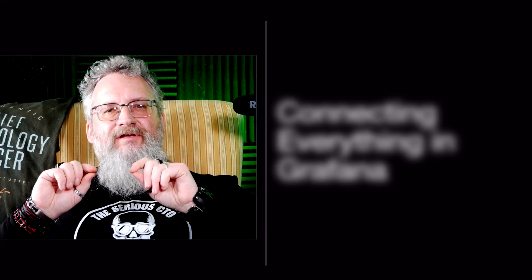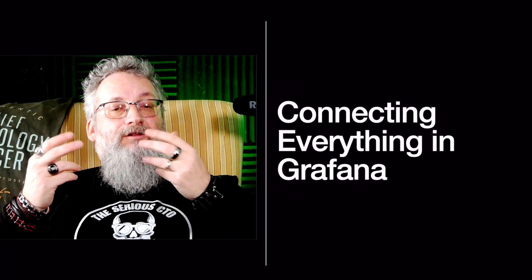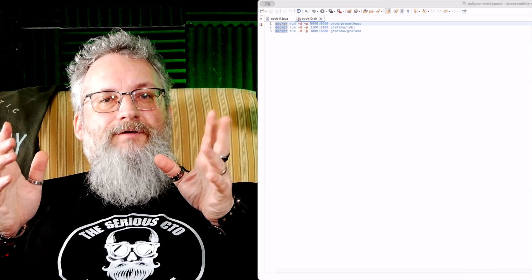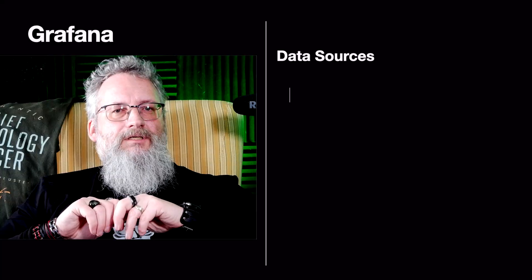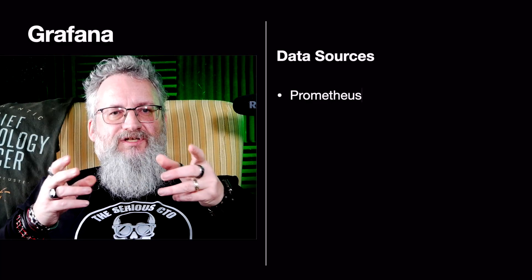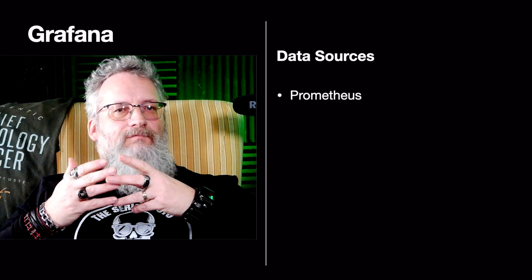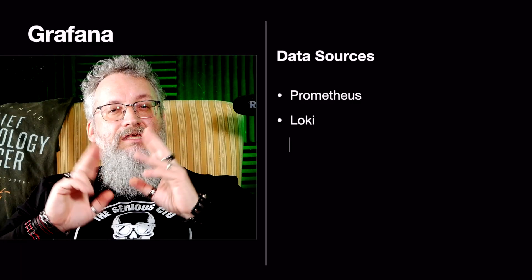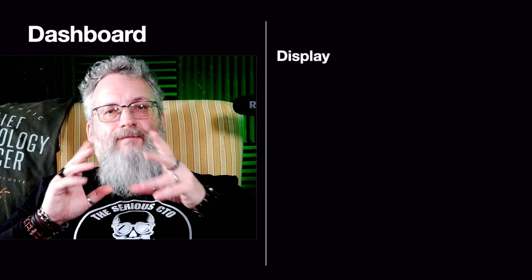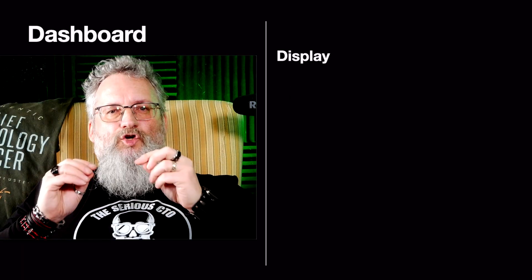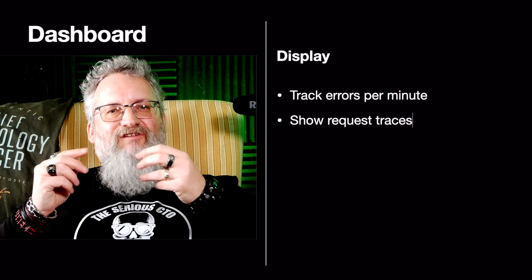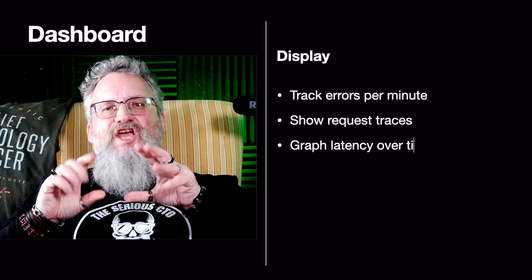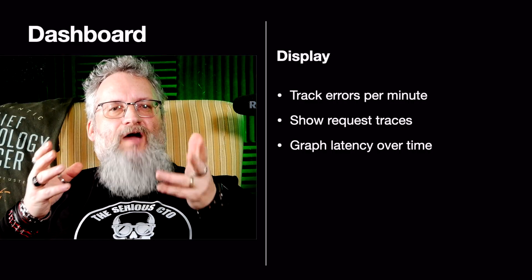Observability isn't just about collecting data — you need to visualize it. Step one: run Prometheus, Loki, and Grafana. Step two: add data sources in Grafana — Prometheus for metrics, Loki for logs, Jaeger for traces. Step three: create a dashboard to track errors per minute, show request traces, and graph latency over time. Now you can debug problems in seconds, not hours.